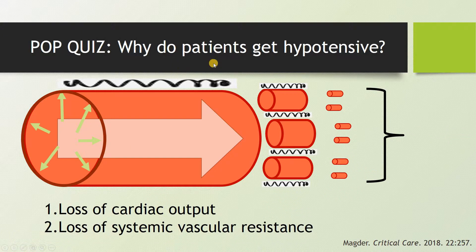So why do patients get hypotensive? It's really one of two things: loss of cardiac output or loss of systemic vascular resistance. Systemic vascular resistance is related to the tone of the blood vessels as well as the cross-sectional area through which the blood is flowing. It's pretty simple — two variables determining this.